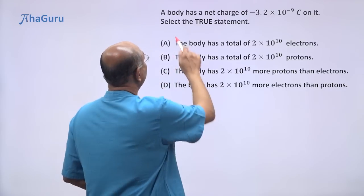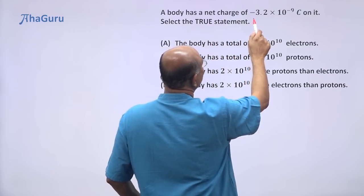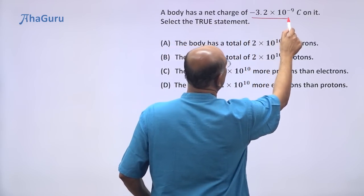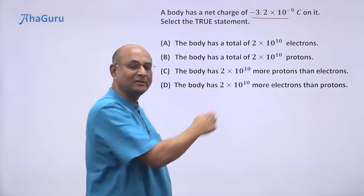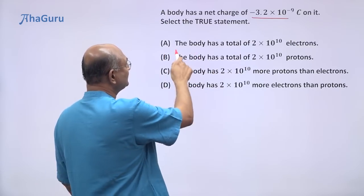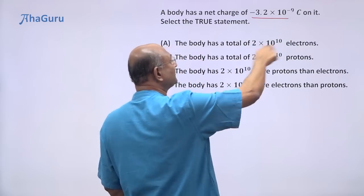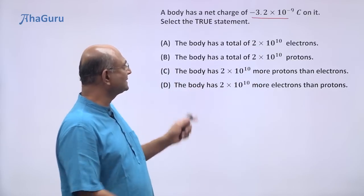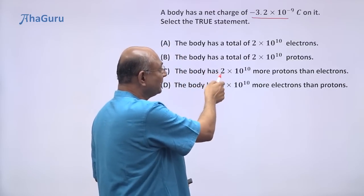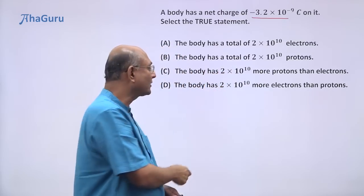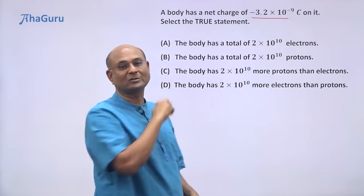In this question, there is a body that has a net charge of -3.2 × 10^-9 coulombs. We want to select which of these options are correct. The first one says that the body has a total of so many electrons. The second one says that the body has a total of so many protons. This one says that you have so many more protons than electrons, so many more electrons than protons.